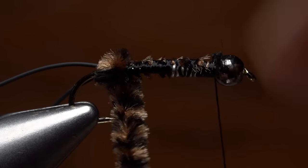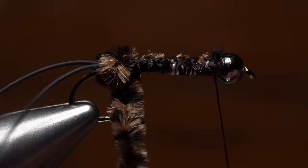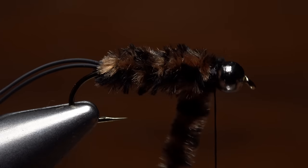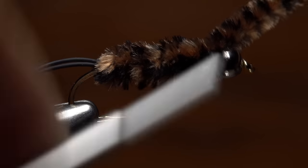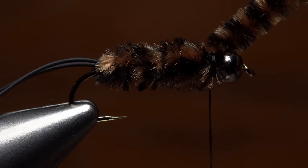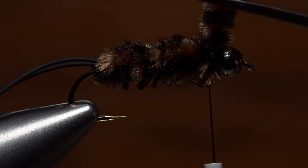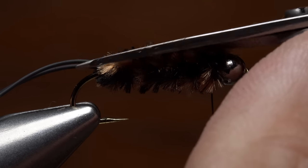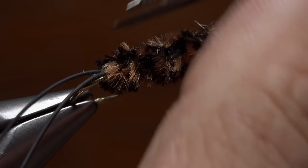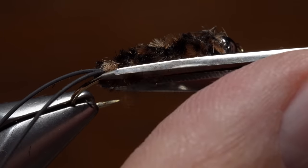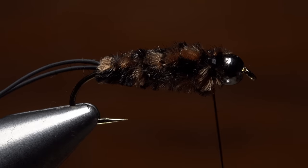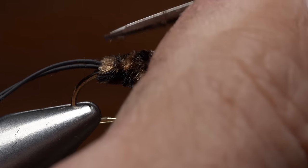You can then start making touching wraps with the chenille to form the body of the fly. Because of the weight, you should notice that the body gets a little thicker as you wrap forward. Anchor the chenille with a few tight turns of tying thread, then snip the excess off close. Although not absolutely necessary, I like to give the chenille a little haircut. I'll trim it pretty heavily on the top and bottom to give the body a somewhat flattened shape. Then I'll cut a little taper in at the back end by the tail.